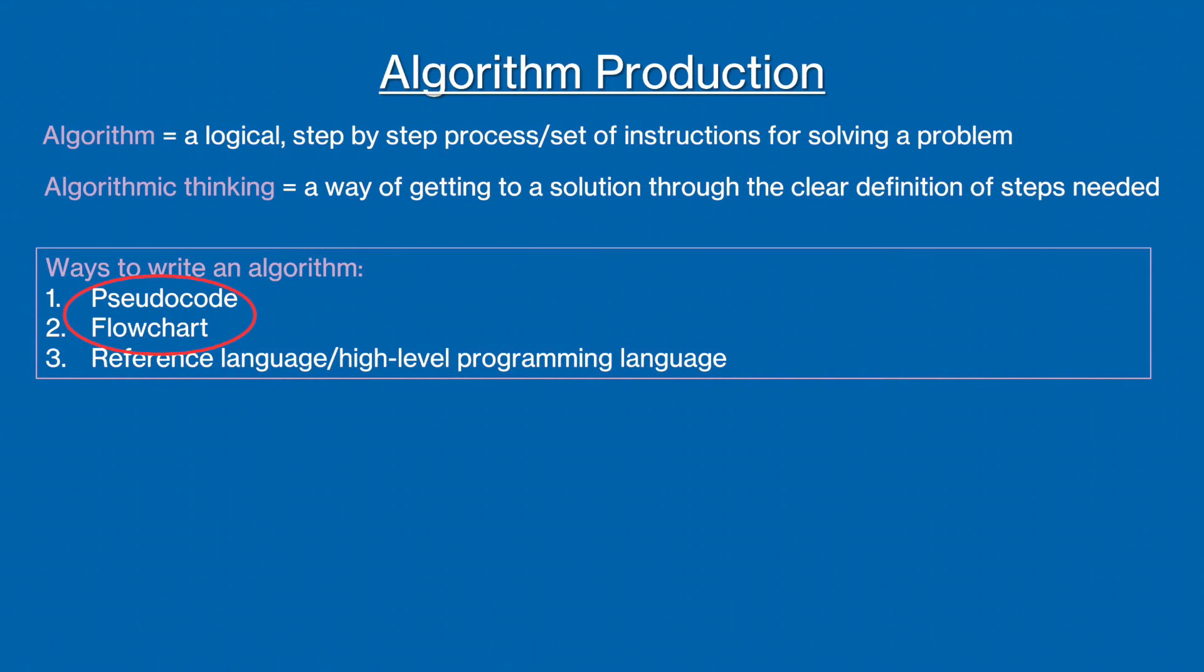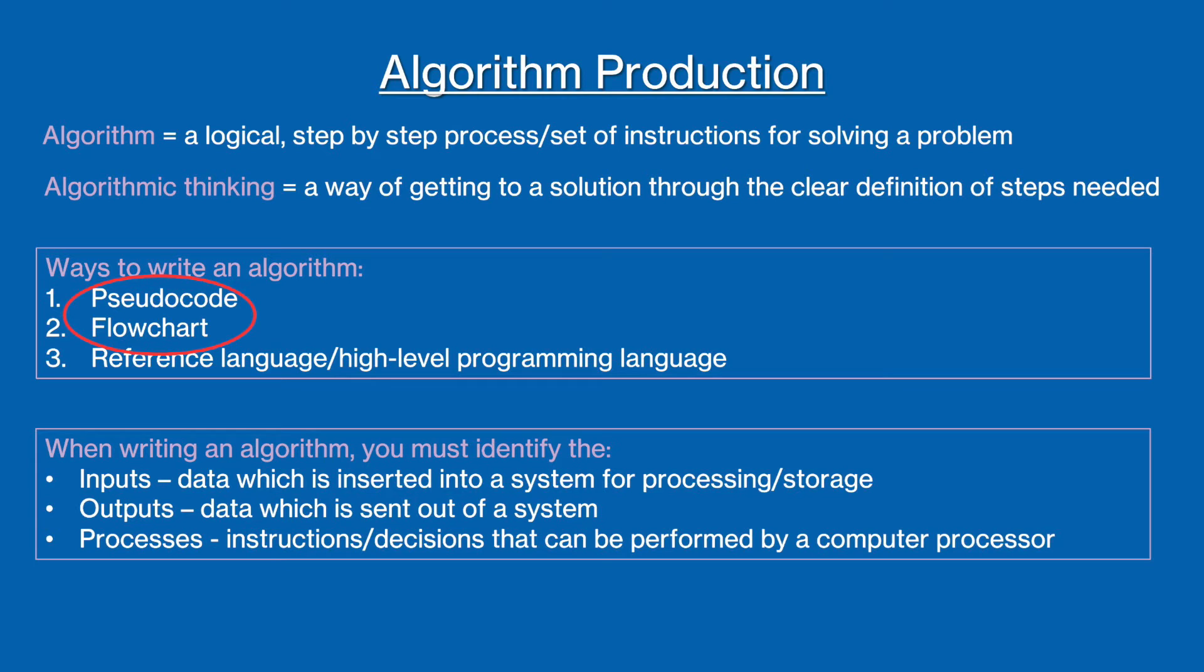To write an algorithm, you must first identify the inputs, outputs, and processes. The inputs is the data that is entered into the system. The outputs are the data that is sent out of the system. And the processes are the decisions made within the program. Clear documentation of these things are important when writing an algorithm, as it makes it much easier to understand the algorithm and make changes to it.